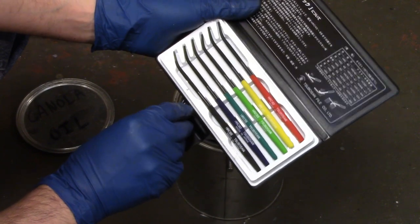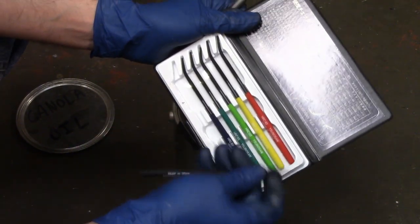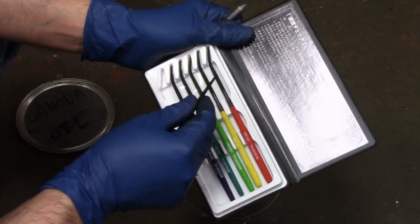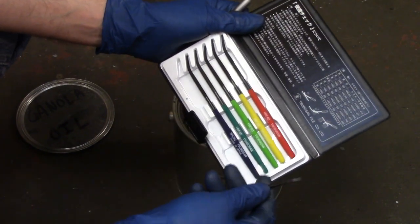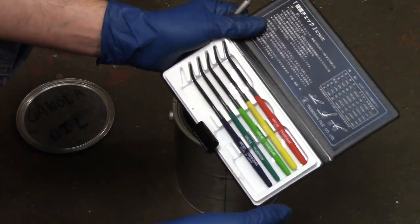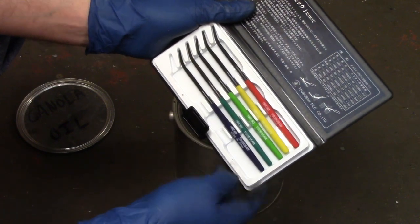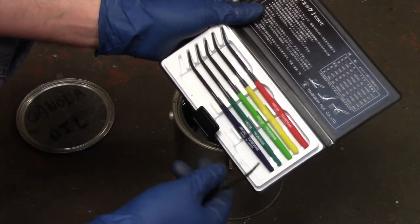So the idea is if the 65 file scratches this, it's softer than 65. If the 60 skates across it and doesn't leave a mark, it's somewhere in between 60 and 65.